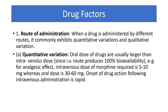For example, the intravenous dose of morphine required for analgesia is 5–10 mg, whereas the oral dose of morphine is 30–60 mg for pain relief. The onset of drug action following intravenous administration is rapid because the drug reaches directly into systemic circulation and the site of action.